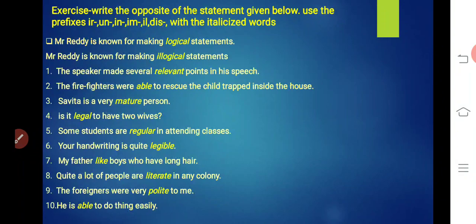The first is: Mr. Reddy is known for making logical statements. This sentence we have to change. Mr. Reddy is known for making illogical statements. What did logical become? Illogical. This is how we have to make changes in all the remaining sentences. Let's do it. Number one. The speaker made several relevant points in his speech. What will relevant become? Irrelevant. I-R. The speaker made several irrelevant points in his speech.